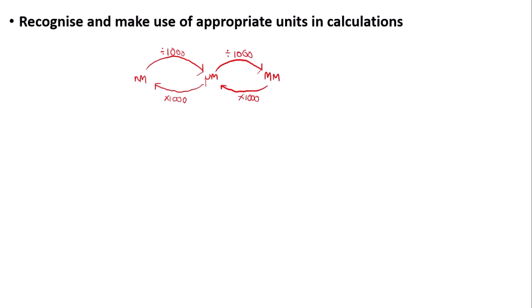Something else they like you to do is convert between millimetres cubed and centimetres cubed. This is useful in things such as volume in gas exchange systems. To convert from millimetres cubed to centimetres cubed, applying the same principle, you divide by a thousand, and then from centimetres cubed to millimetres cubed you multiply by a thousand.